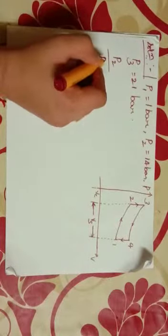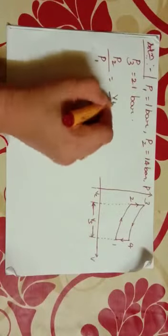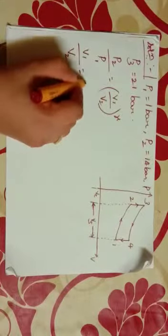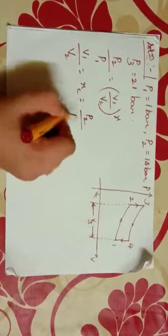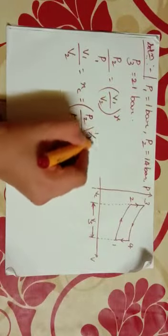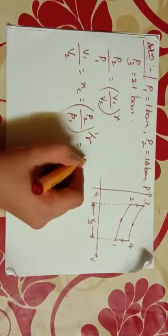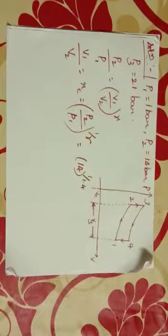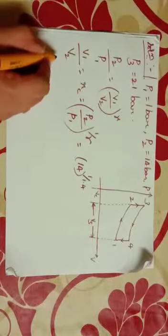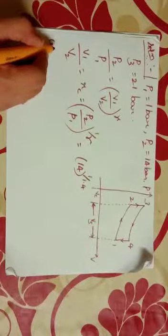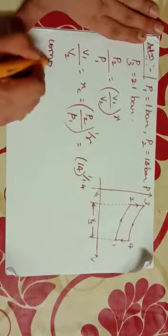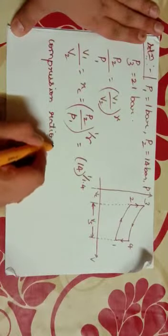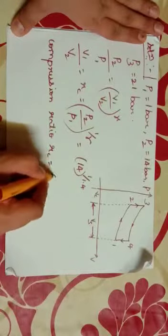P2 by P1 is equal to V1 by V2 raised to gamma. V1 by V2 is equal to Rc, which is equal to P2 by P1 raised to 1 by gamma. That is equal to 14 raised to 1 divided by 1.4. The compression ratio Rc is equal to 6.58.